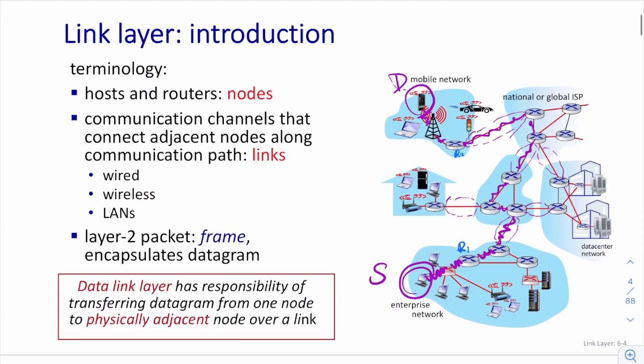The terminology used here: we have nodes and links. A node is any host — whether a PC, laptop, iPad, or a router in the core network. The communication channels connecting adjacent nodes along a communication path are called links — whether wired or wireless, they are both called links.